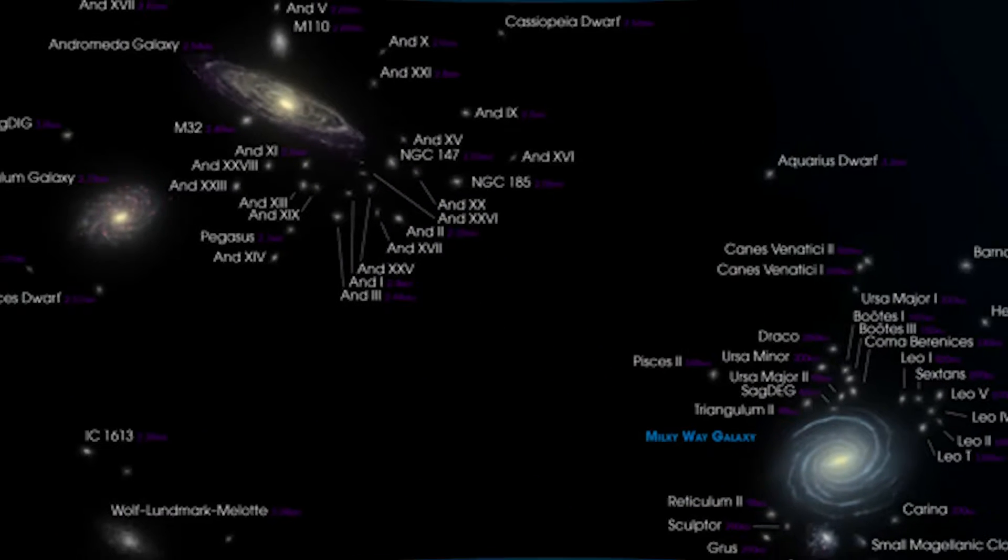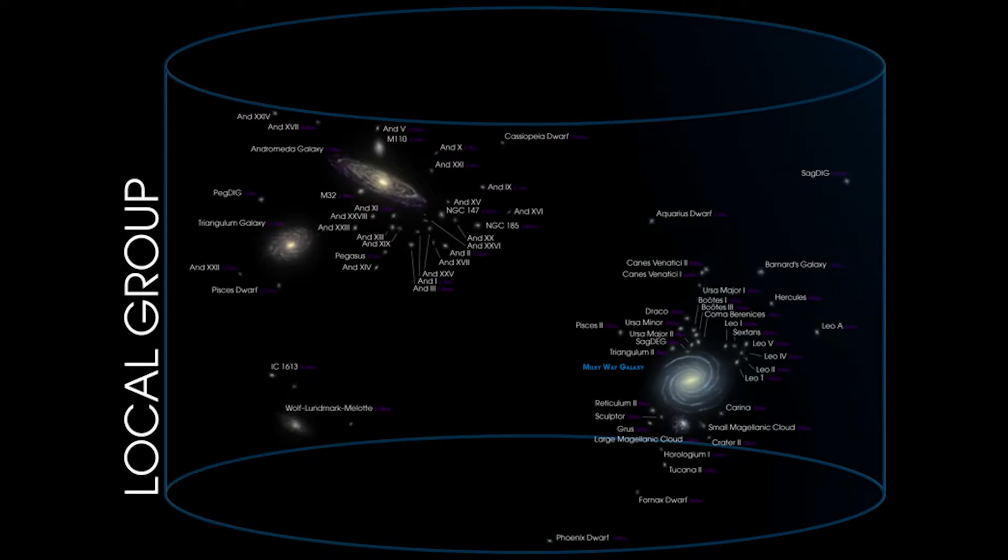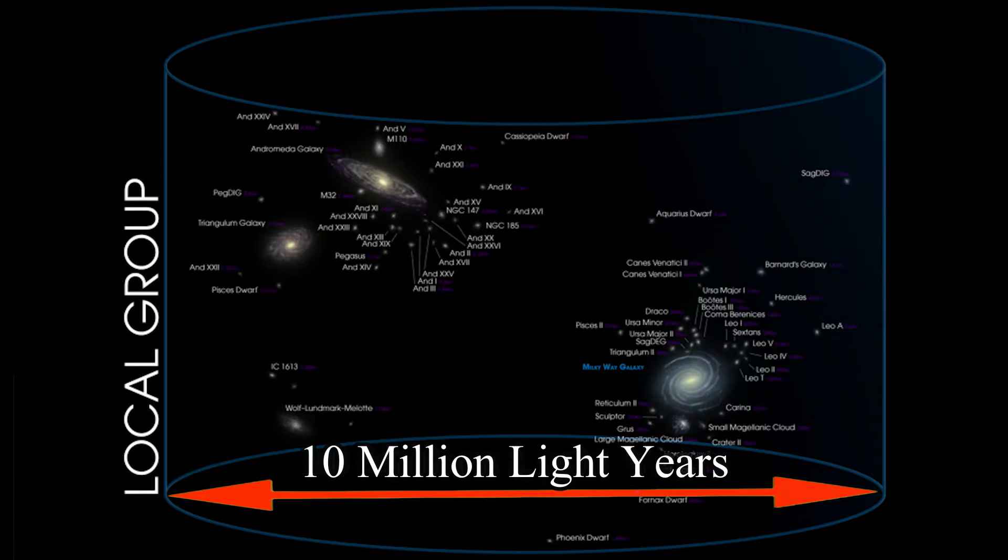Continuing to zoom out, we are now looking at the Local Galactic Group, which consists of the Milky Way Galaxy among other galaxies in our universe. The total distance across the Galactic Group spans 10 million light years.